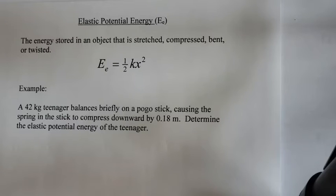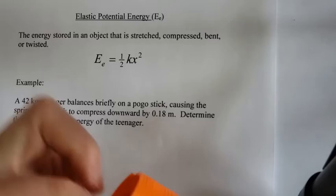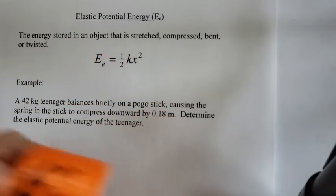So we've talked about gravitational potential energy, so energy due to an object's height. We've talked about kinetic energy, which is energy due to an object's motion. So if it has speed, it has energy. And now I want to talk about elastic energy, so energy due to something being either stretched or compressed.